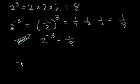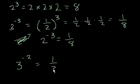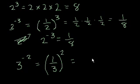Let's do another one. Let's say 3 to the negative 2 power. Once again, immediately when we see that negative in the exponent, the easiest thing to do is just immediately take the reciprocal of the base, so we take 1 third and we raise that to the positive 2 power. And that's easy now — 1 third squared equals 1 over 9.